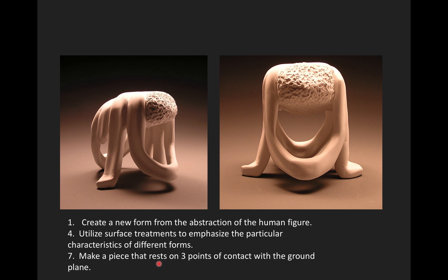This design qualifies as three different exercises. One is to create a new form from the abstraction of the human figure — many viewers saw this as the abstraction of a face, with a jaw, hair, and an abstract brain form. Another exercise was to utilize surface treatments to emphasize different forms — we see the chiseled brain contrasted from the smooth, almost bone-like portion. Another exercise was to make a piece that rests on three points of contact. This piece is casting beautiful shadows on the ground plane because it's suspended, with one, two, and then behind three. Making that portion suspended adds great contrast from the back piece and beautiful shadows on the tabletop.